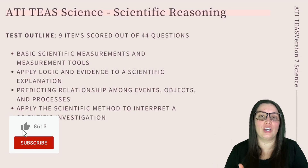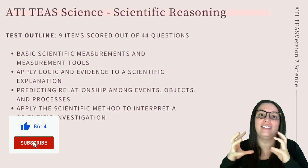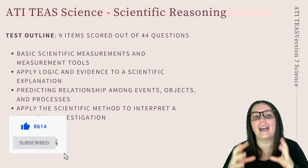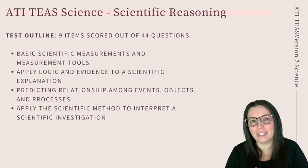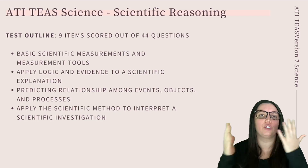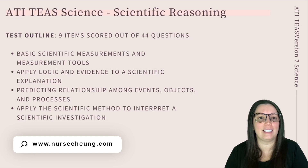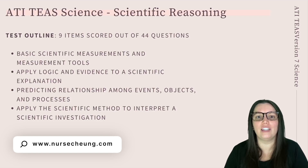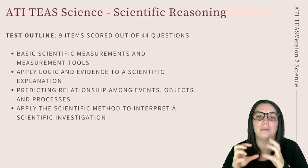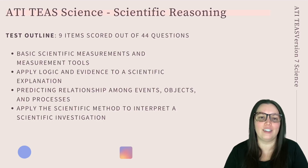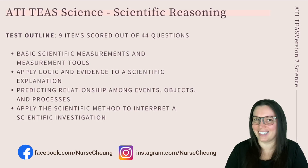We're going to begin by looking at the objectives on this particular portion of the exam. The test outline has a total of nine scored items out of the 44 total science items, and they cover basic scientific measurements and measurement tools, applying logic and evidence to a scientific explanation, predicting relationships among events, objects, and processes, and applying the scientific method to interpret scientific investigations.